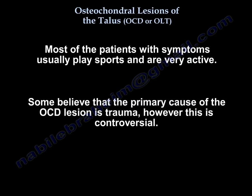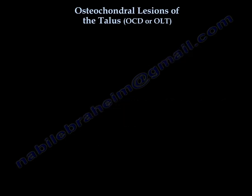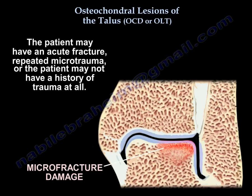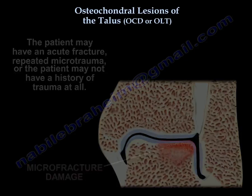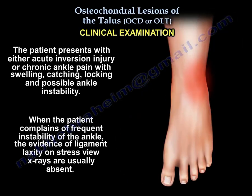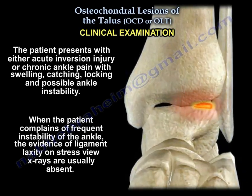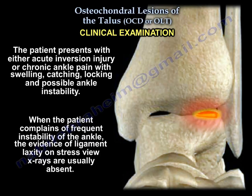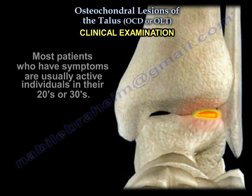A lot of people think the primary cause of this lesion is trauma, but this is controversial. The patient may have an acute fracture or repeated microtrauma, or may have no history of trauma at all. The patient presents with either an acute inversion injury or chronic ankle pain with swelling, catching, locking, and possibly ankle instability. When the patient complains of frequent instability, evidence of ligament laxity on stress x-rays is usually absent. Most patients with symptoms are in their 20s or 30s.